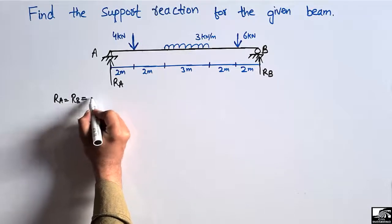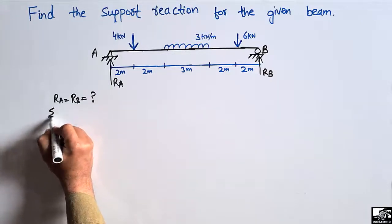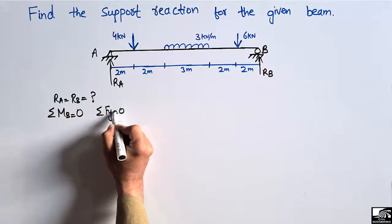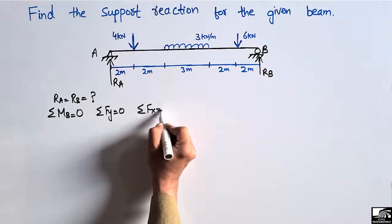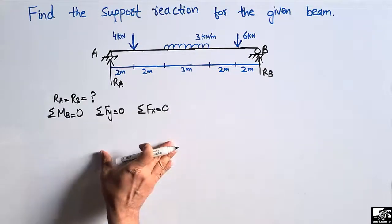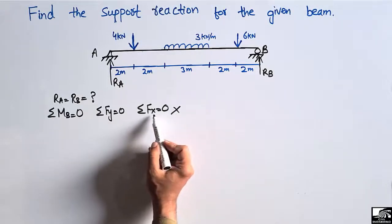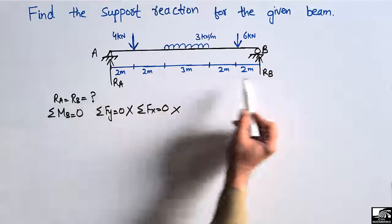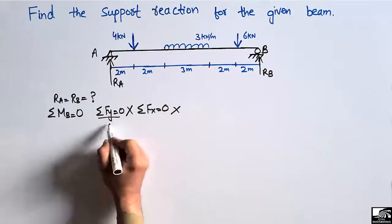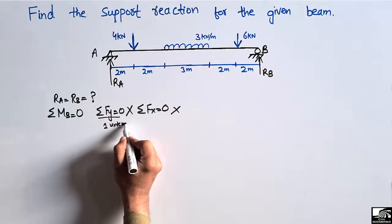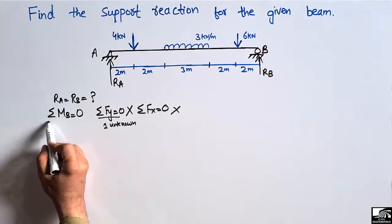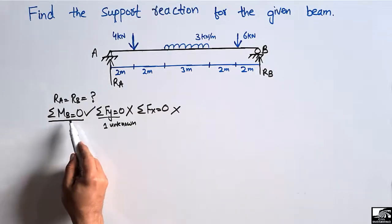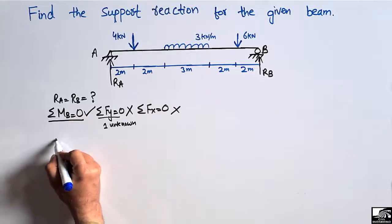RA and RB are unknown. We can use the equilibrium equations: summation of moments equal to zero, summation of vertical forces equal to zero, or summation of horizontal forces equal to zero. We cannot use the horizontal equation as there is no horizontal load. We cannot use the vertical force equation yet because we have two unknowns. When two unknowns are present, we must use the moment equation first.